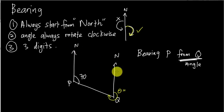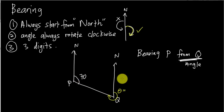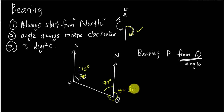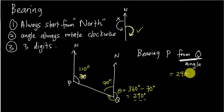In bearing, the two north lines are parallel. From parallel lines, we know interior angles add up to 180 degrees. So if this angle is 70, the interior angle is 110. Since one full circle is 360 degrees, I use 360 minus 70 to get the bearing of P from Q, which is 290 degrees.